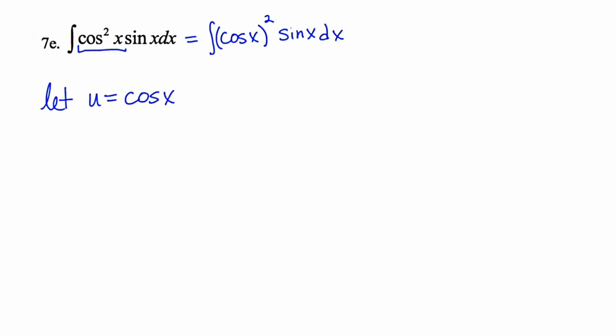Differentiating both sides with respect to x, I get du/dx equals negative sine x. Cross multiplying, I'll get du equals negative sine x dx. I notice that there's no negative sign floating around in the integrand, so I'm going to divide both sides by negative. And I'll take these four substitution steps and place them in a box for organization.